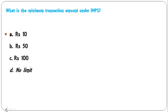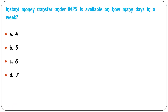What is the minimum transaction amount under IMPS? There is no minimum transaction limit for IMPS — D is the correct answer. Instant money transfer under IMPS is available on how many days in a week — 4, 5, 6, or 7 days? You can do IMPS transactions all 7 days including holidays — D is the correct answer.